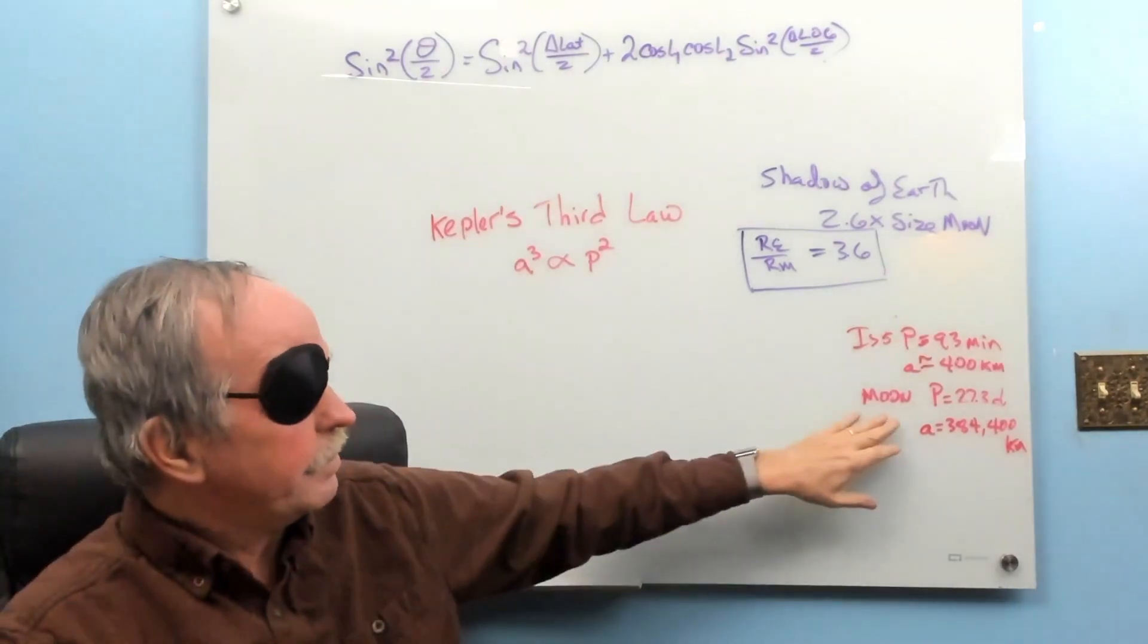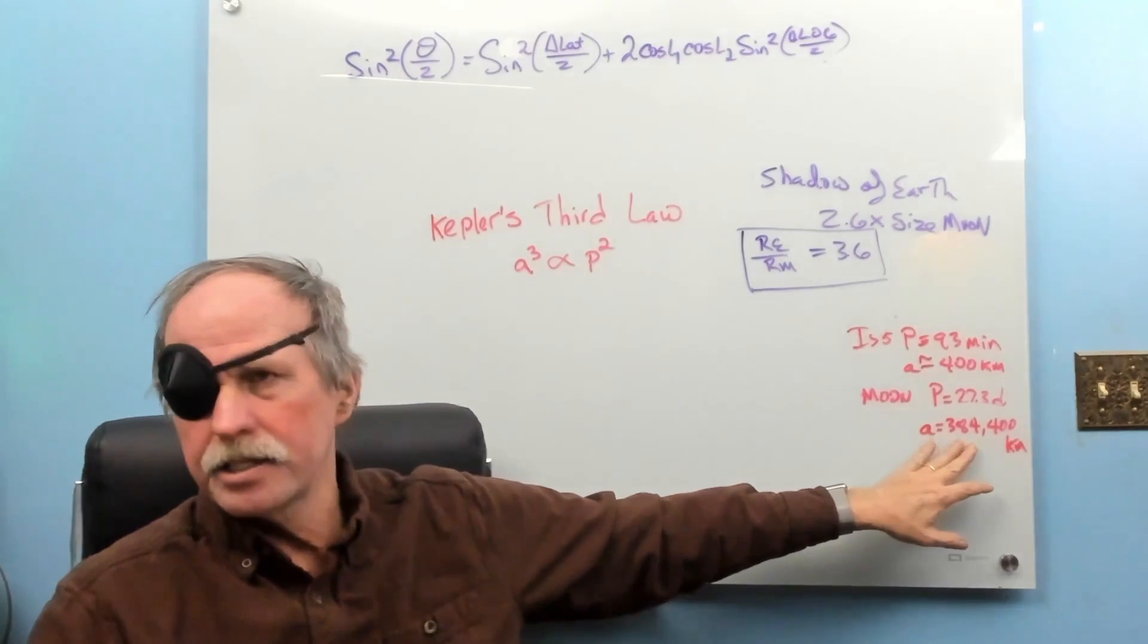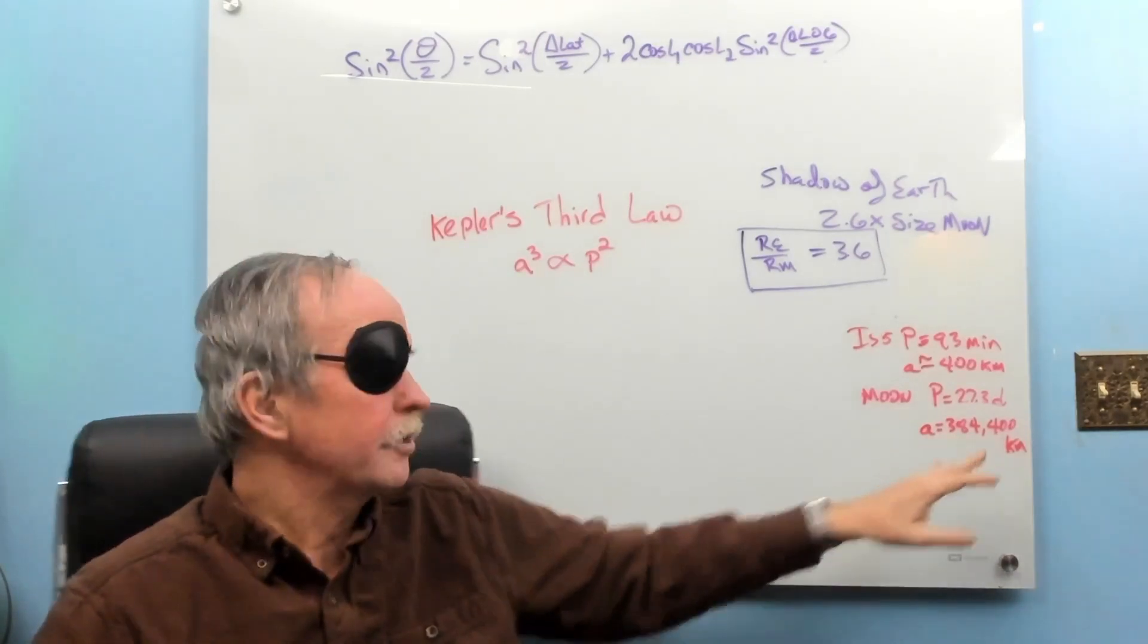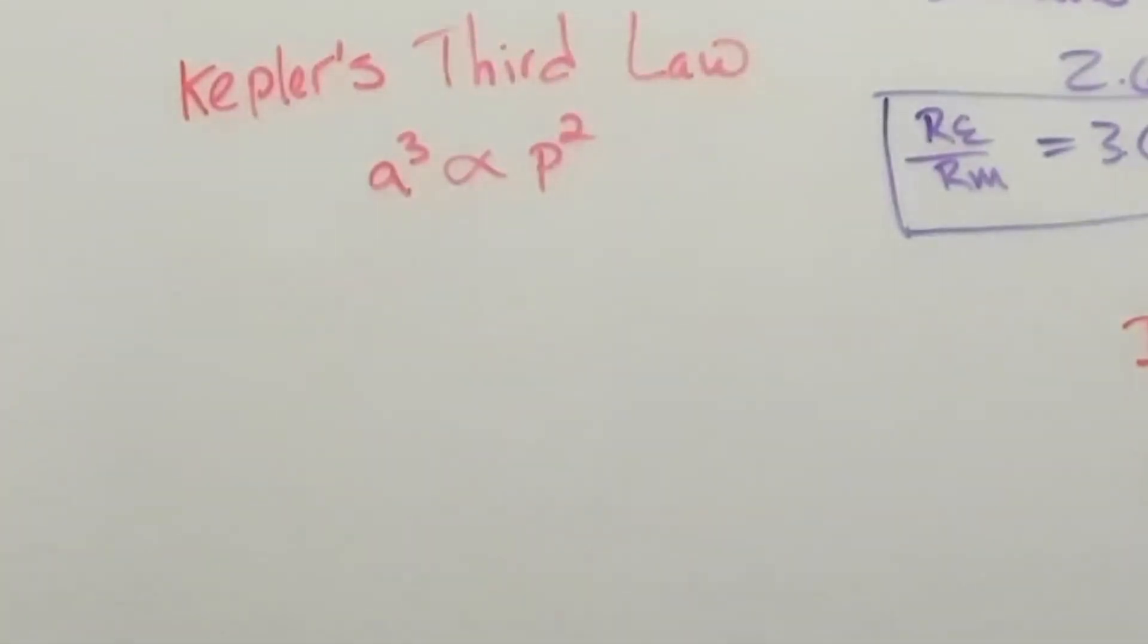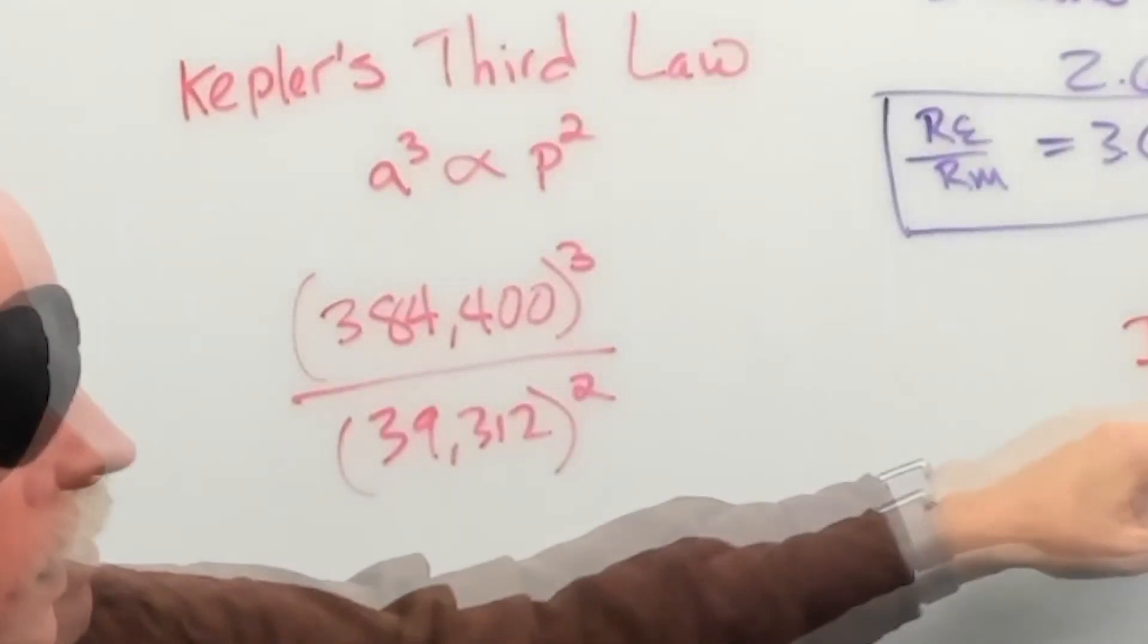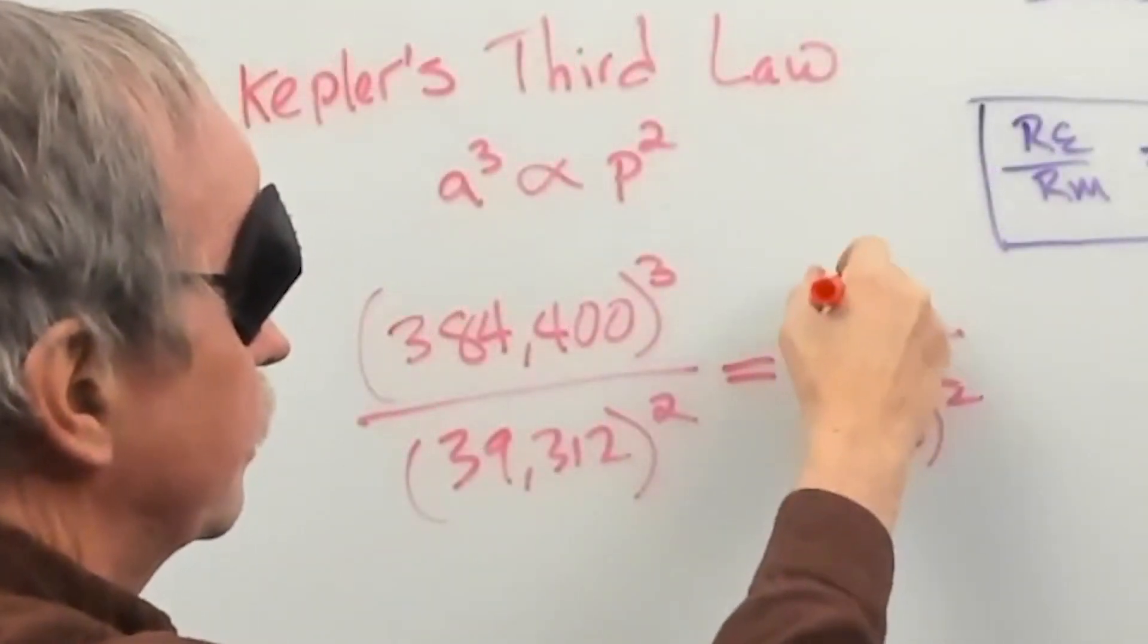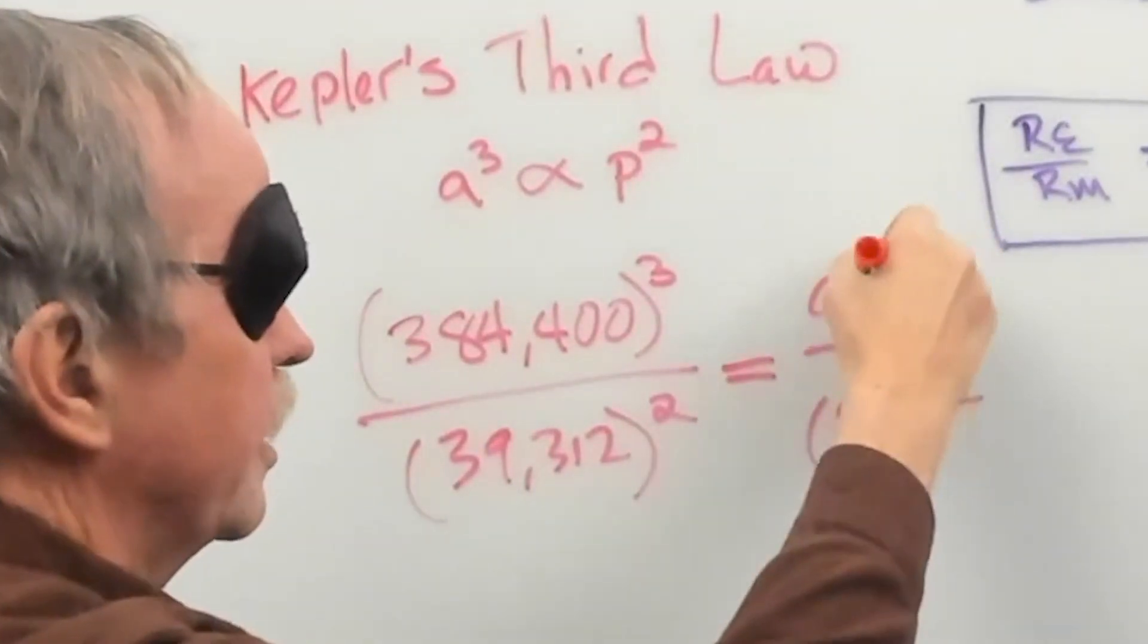Now, for example, the Moon's period is approximately 27.3 days. And its orbital distance is 384,400 kilometers. So, if we take the radius of the orbit cubed, and then we take the period of the orbit in minutes, which is 39,312 minutes, and square that, that would equal the period of the International Space Station, which is 93 minutes, times the distance of the ISS cubed.